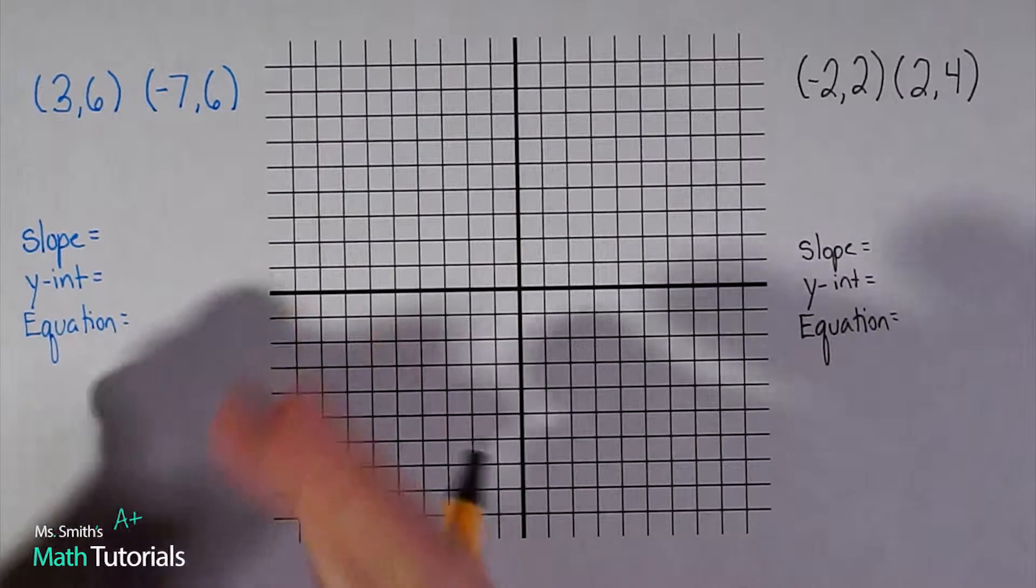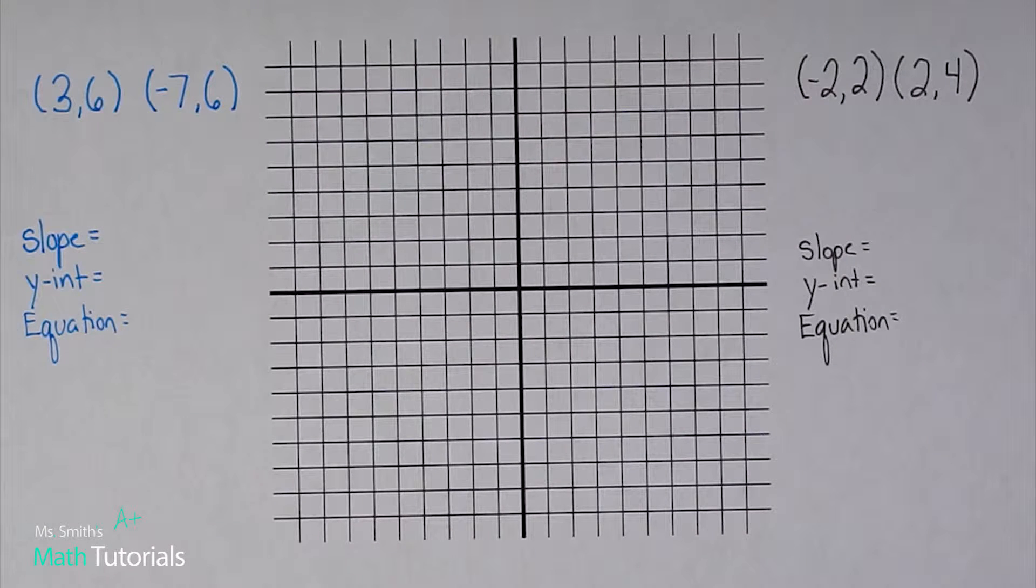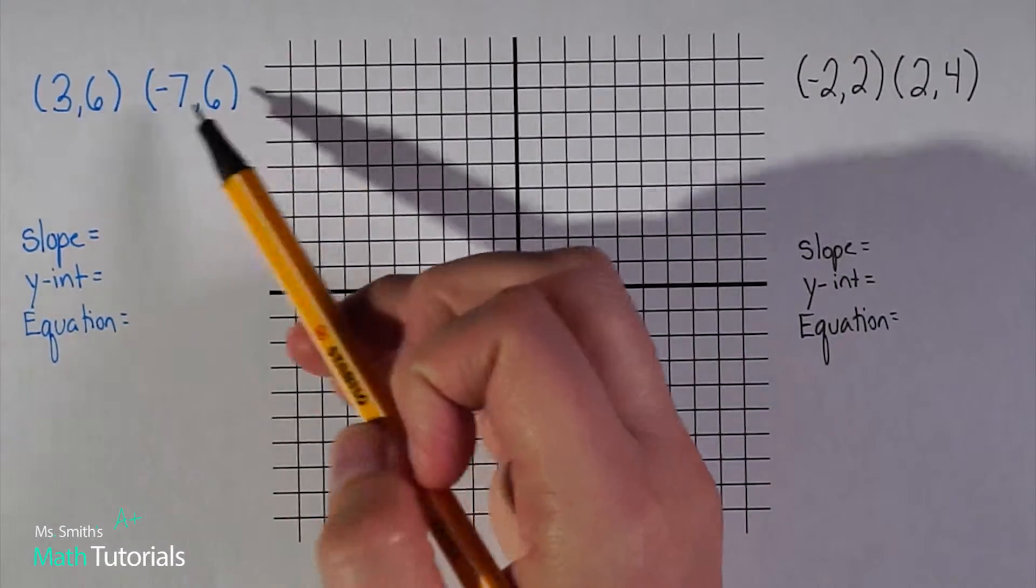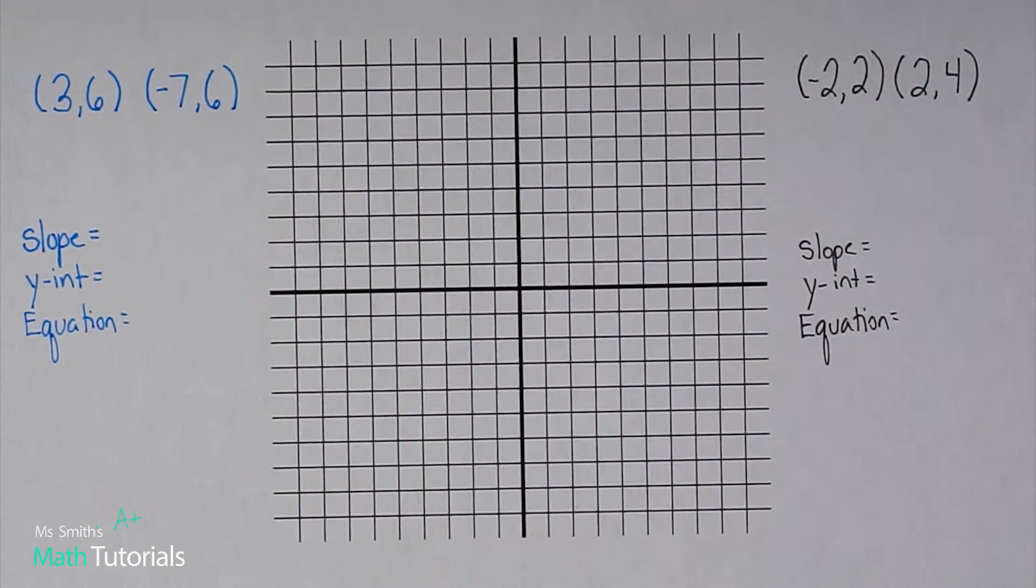So we're going to do a blue line and a black line. We'll start with the blue. I've got two points that it's given me: positive three and positive six.